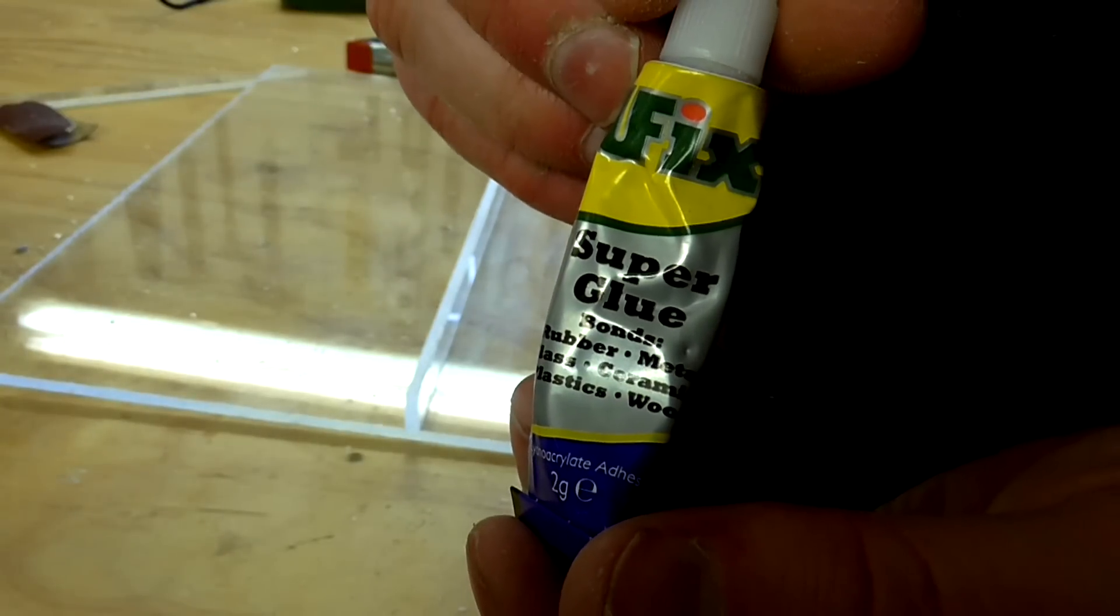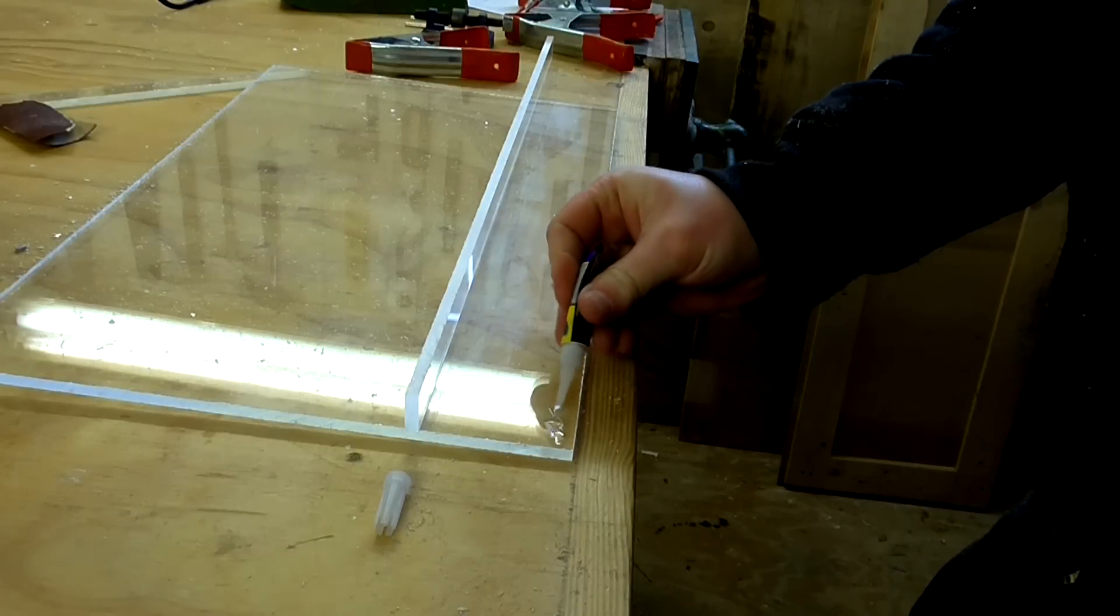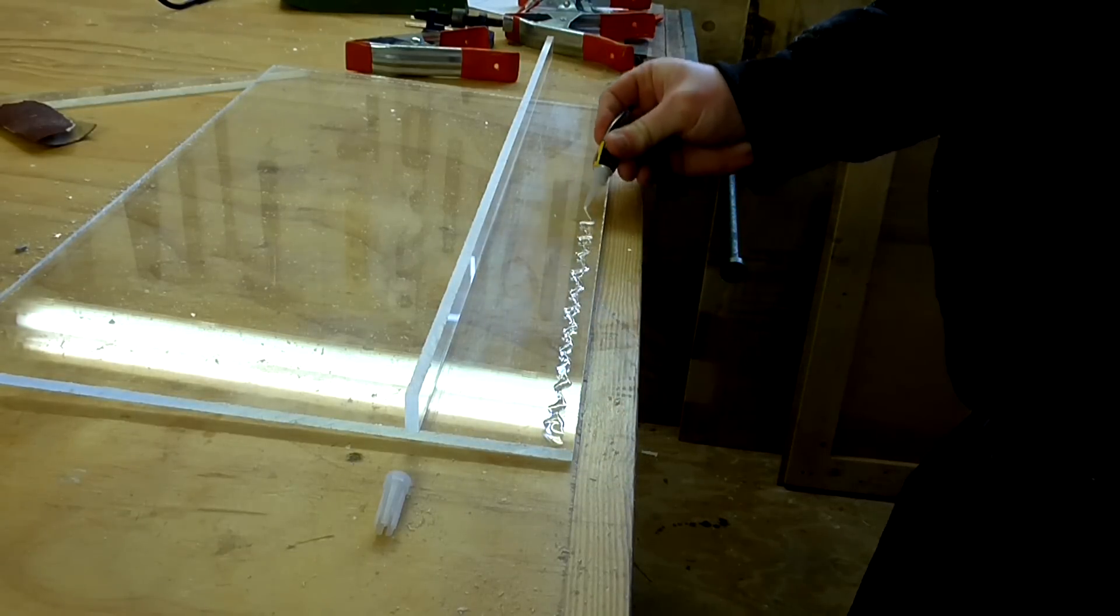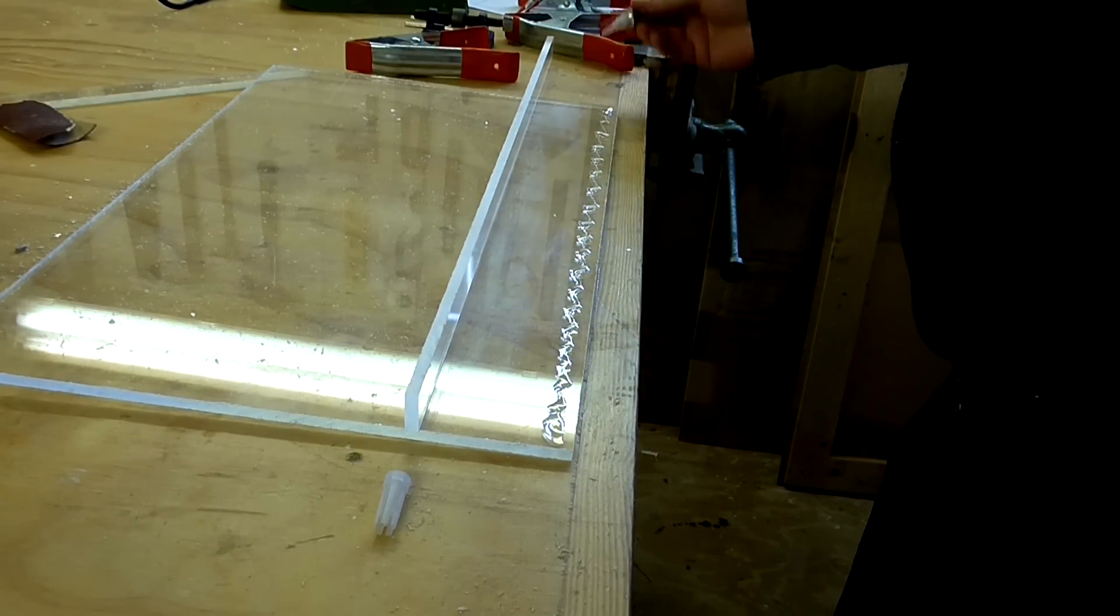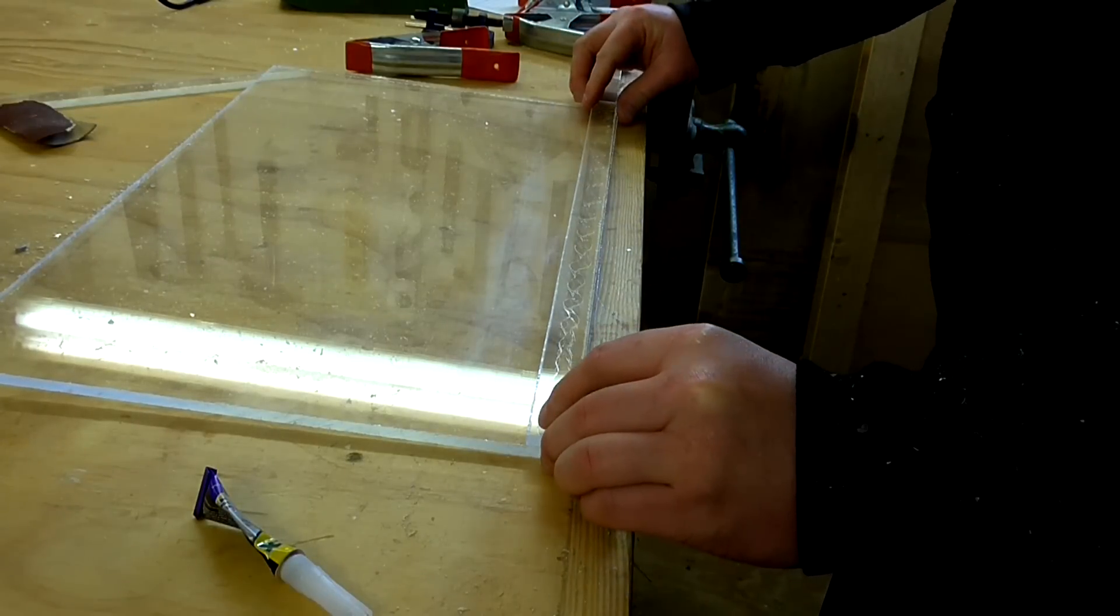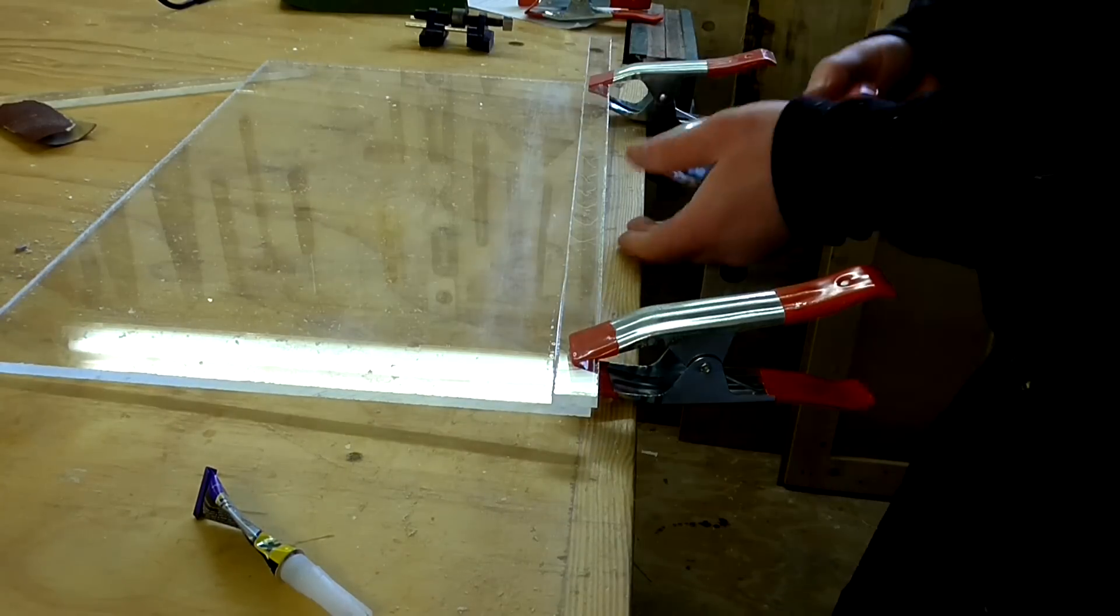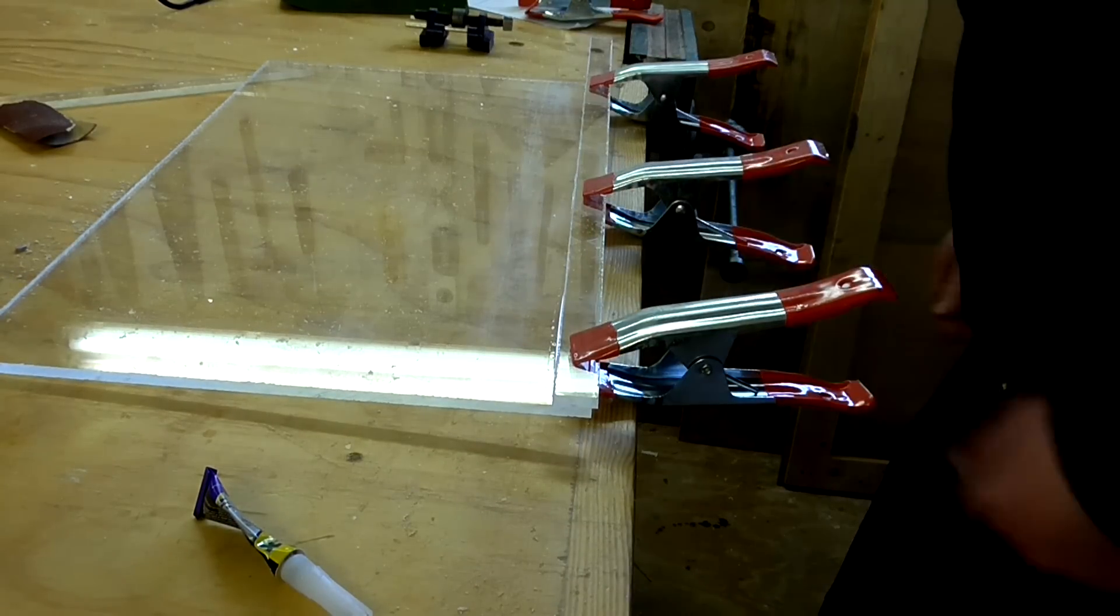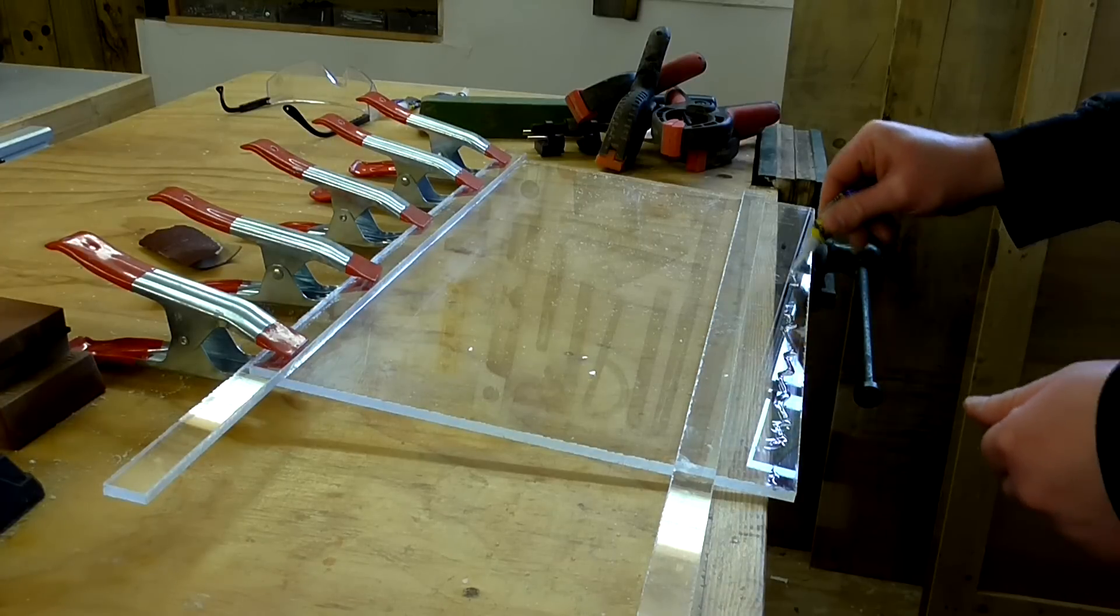I used some of this super glue from the pound shop to glue the perspex together. Super glue works well on perspex although when it's set it can make the perspex go a little bit cloudy. But this project doesn't need to look pretty and I'm mainly using perspex just because it won't soak up any water.